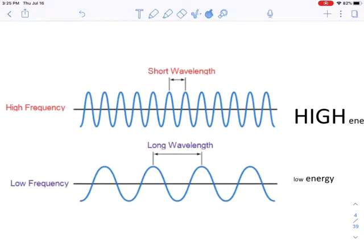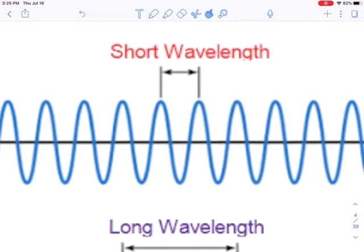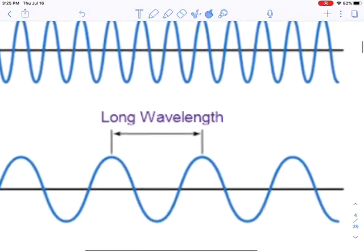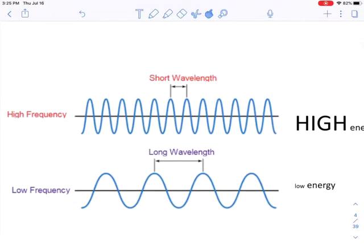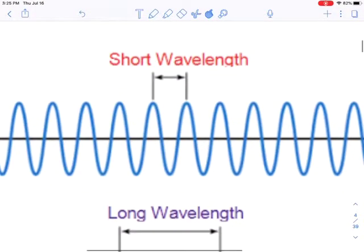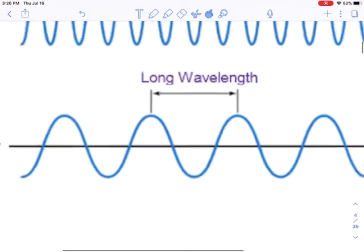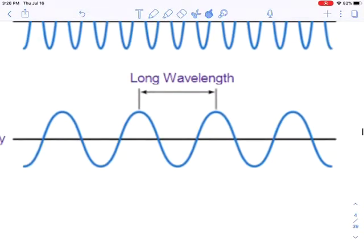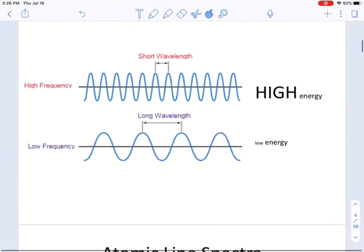Wavelength is the distance from crest to crest or trough to trough. In this example, there's a very short wavelength compared to this example that has a very long wavelength. Frequency is how many of those wavelengths there are within a given space. Short waves fit many within that space — high frequency — whereas longer waves fit fewer, so their frequency is lower.